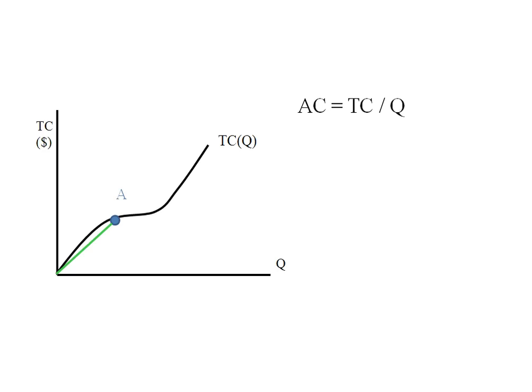Here's how that works. The slope of the ray is rise over run, so the rise here is going to be whatever the total cost is at point A—I could read that off the vertical axis—and the run is whatever the output is at point A. So that's how we get that the slope of the ray is the same thing as average cost at that particular point.